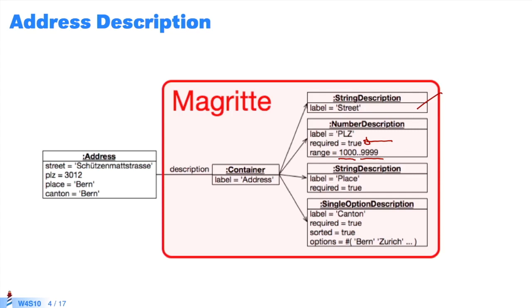This is specified in the number description. This information can be taken into account for automatic form validation. For place, we also describe it as required and as place. Moreover, in Switzerland, there are 26 cantons. The canton is part of a list. So we have single option description. It is required. We want it to be sorted and the options listed. So the list of options is limited to these 26.